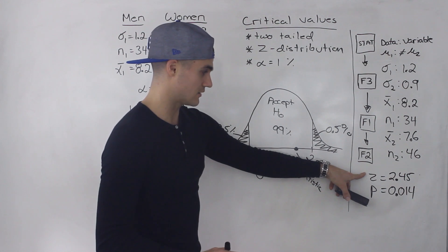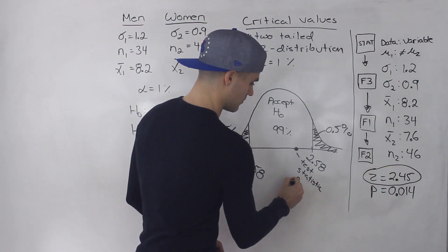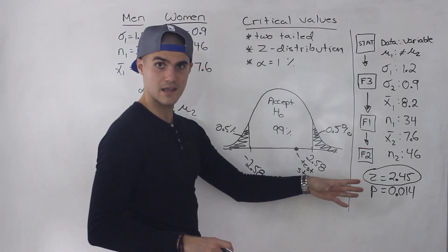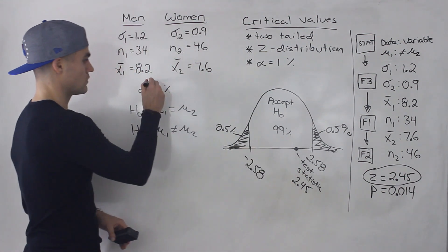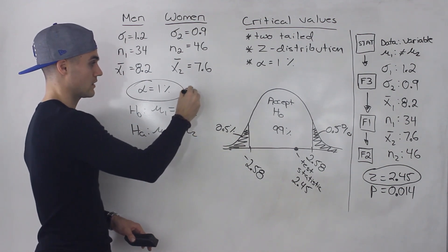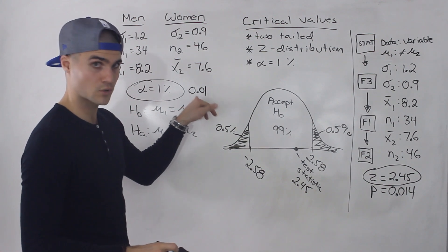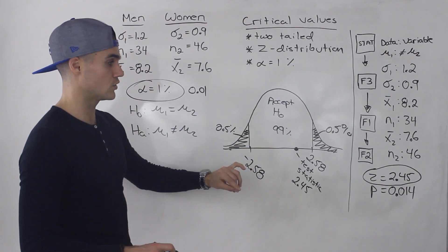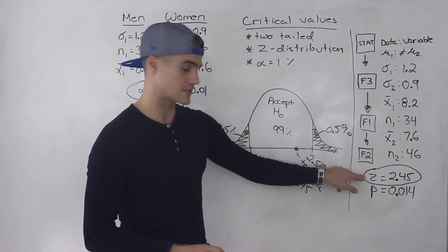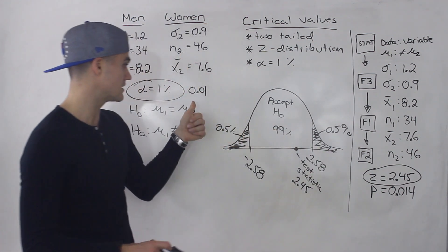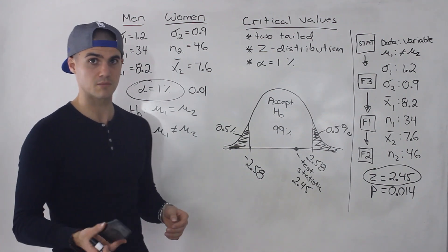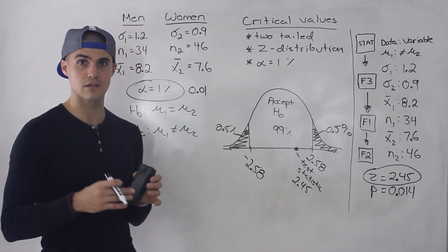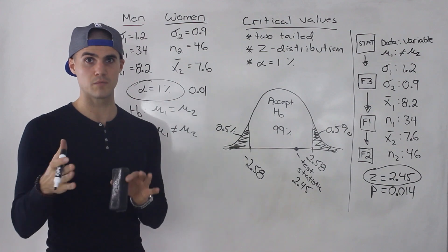The Z value of 2.45 matches what we got manually. For the p-value, just like one-sample hypothesis testing, you compare it to the significance level. Here, p = 0.014 is greater than α = 0.01, so we fail to reject the null hypothesis. If it were less than, we would reject it. Both methods — checking the Z statistic against critical values, and comparing p-value to significance level — give the same conclusion: not enough evidence that men and women in this city differ in hours of sleep.